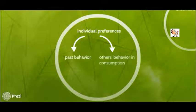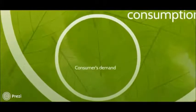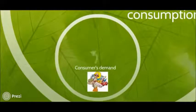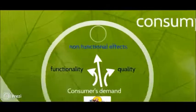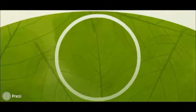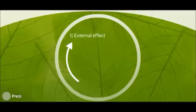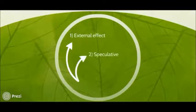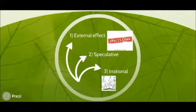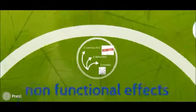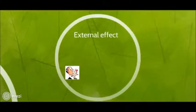We can see that an individual's preferences are heavily influenced by his past behavior as well as others' behavior in consumption. Consumers' demand is not only derived from its functionality or the quality of the commodity. There are also other non-functional effects on the demand for the commodity, classified into three: external effects on utility, speculative, and irrational. We will only emphasize heavily on the first category, which is external effects on utility.